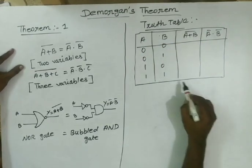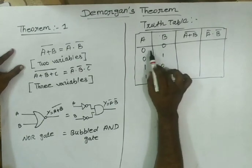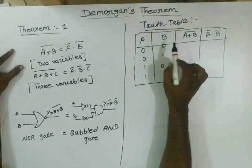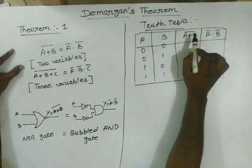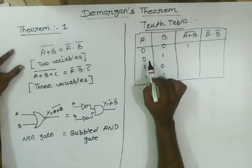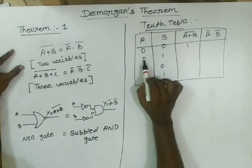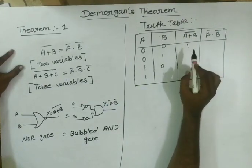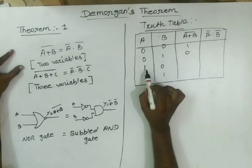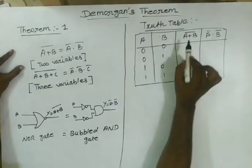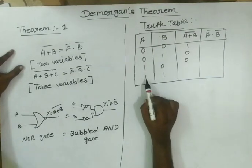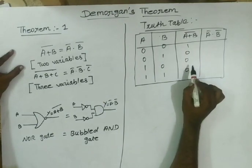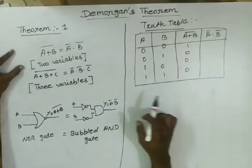First input: A=0, B=0. A plus B = 0 plus 0 = 0, complement gives 1. Next: A=0, B=1. 0 plus 1 = 1, complement gives 0. Next: A=1, B=0. 1 plus 0 = 1, complement gives 0. Next: A=1, B=1. 1 plus 1 = 1, complement gives 0. Left hand side verified.